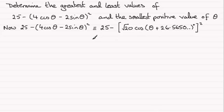Now if I square this bracket, we're going to have the 25 as the first term, then root 20 times root 20 is just 20, and then we're going to get cos² of the angle θ plus 26.5650 degrees. Now when it comes to finding the greatest and least values for this expression, the first term always remains constant. It's this second term that's going to vary depending on what θ is.